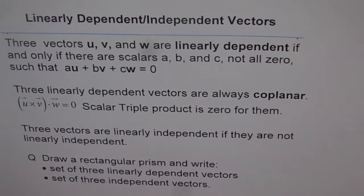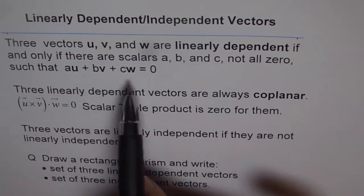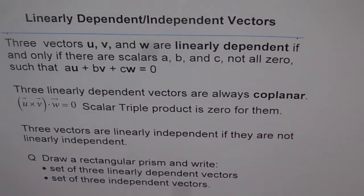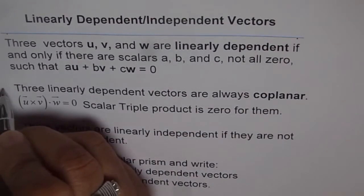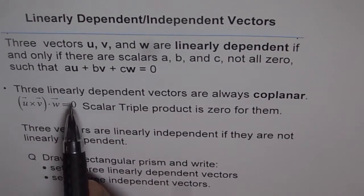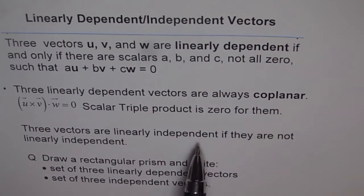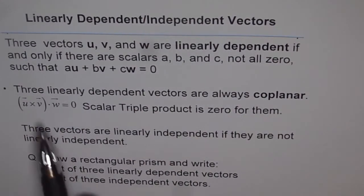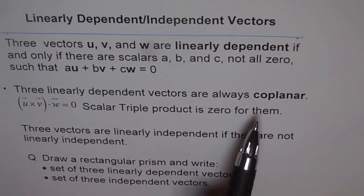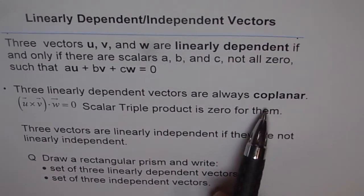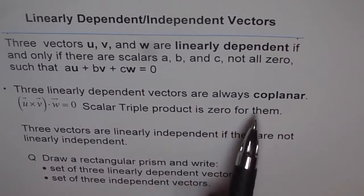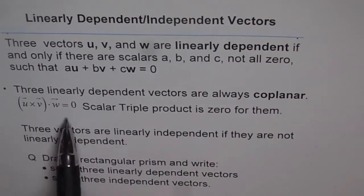That really means that if you can write this statement — that is, a linear combination of the three vectors is zero — that means the three vectors lie in the same plane, so they are coplanar. Three linearly dependent vectors are always coplanar. Those who have done dot and cross product will realize we can algebraically find whether vectors are coplanar or not by scalar triple product.